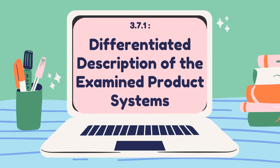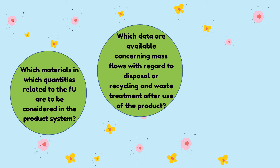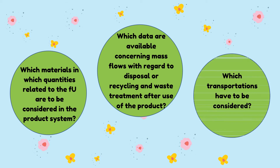Differentiated Description of the Examined Product Systems. There are some questions that need to be examined. First, which materials in which quantities related to the functional unit are to be considered in the product system? Second, which data are available concerning mass flows with regard to disposal or recycling and waste treatment after use of the product? Third, which transportations have to be considered?